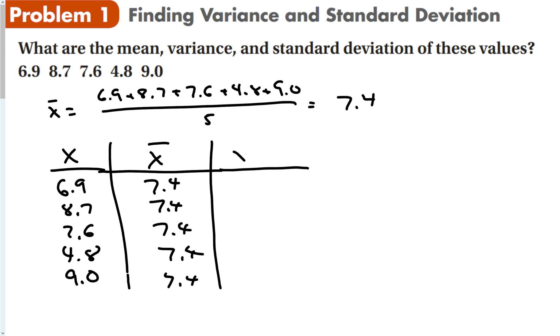Then we take x minus x bar. So 6.9 minus 7.4 gives me negative 0.5. 8.7 minus 7.4 is 1.3. 7.6 minus 7.4 is 0.2. Then we have negative 2.6 and positive 1.6. Those are my x minus x bar values.